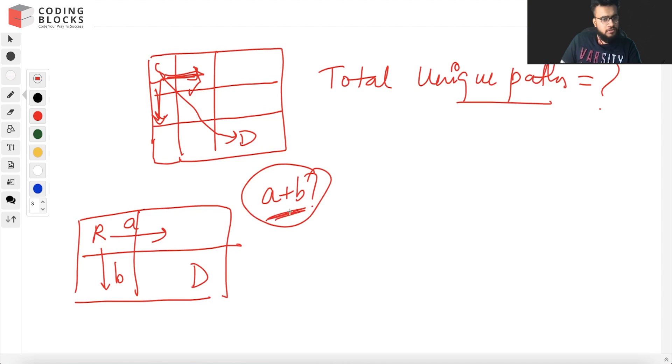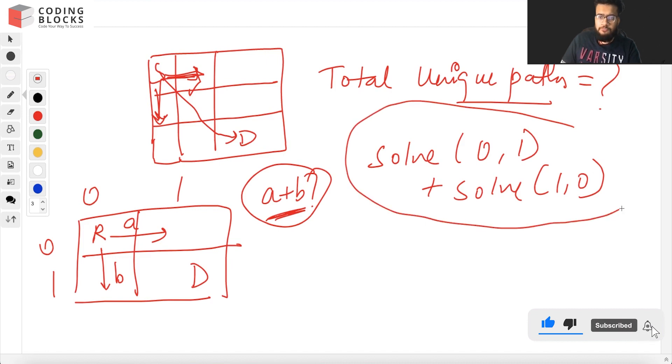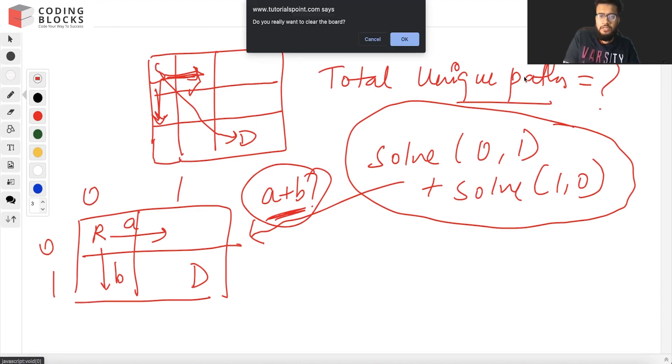This is true. So what if this function gives us the answer? We can just pass solve(0,1) and this will be (1,0). This expression will give us the answer for this problem. So let's draw the recursive tree for that to see how things will take place.